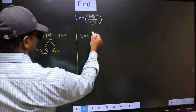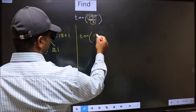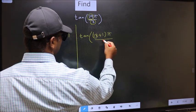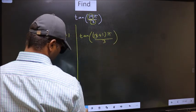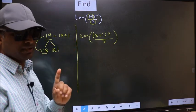This will become tan. In place of 19, we write 18 plus 1, times π/3. This is your step 1.